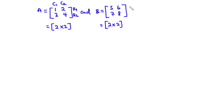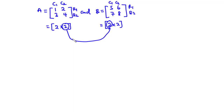Because matrix B also has two rows and two columns. Now to multiply two matrices, you need to make sure that the number of columns of the first matrix is equal to the number of rows of the second matrix. If these two numbers are the same, then you can multiply the two matrices, and we say that the two matrices are compatible under multiplication.